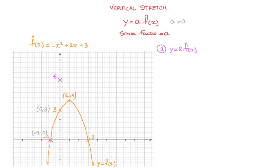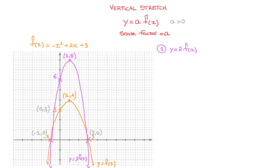Moving to the second x-intercept at three, whose coordinates are three, zero — multiplying the y-coordinate zero by the scale factor two, it stays zero, so this x-intercept won't change. All I have to do now is draw the parabola passing through these points, which looks something like this. That's the curve of y equals two times f of x. Comparing it to the original curve y equals f of x, we can see quite clearly that we've stretched the curve in the vertical direction by a scale factor of two.